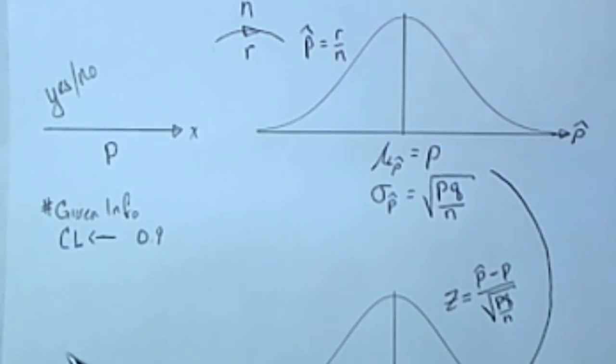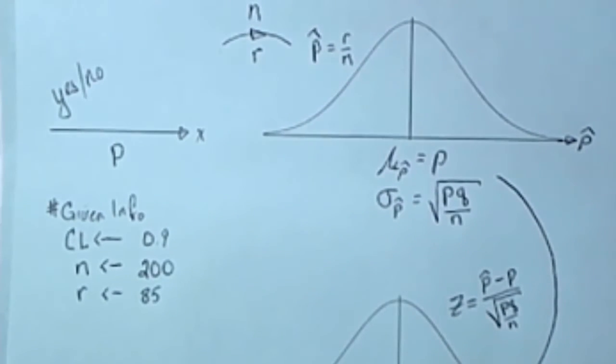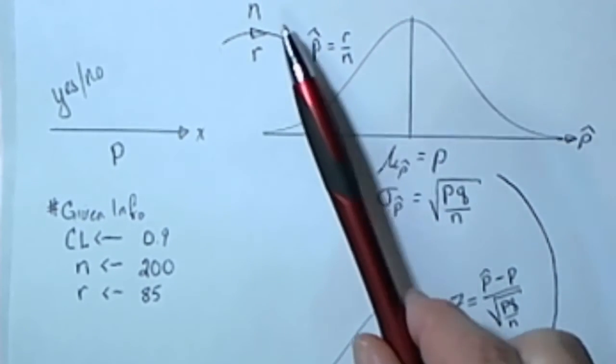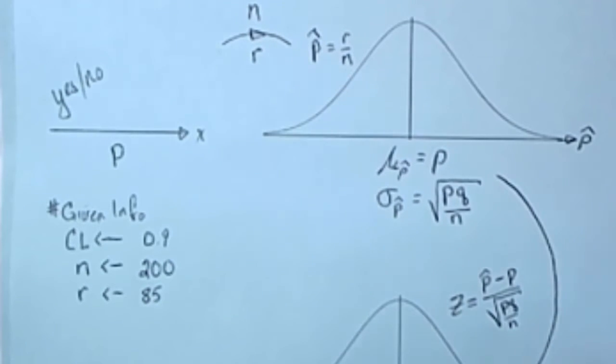For this example, let's say that the confidence level is 90%. Enough information needs to be provided to find the P hat of our particular sample. Suppose that we're looking at a sample that has 200 individuals in it with 85 successes.